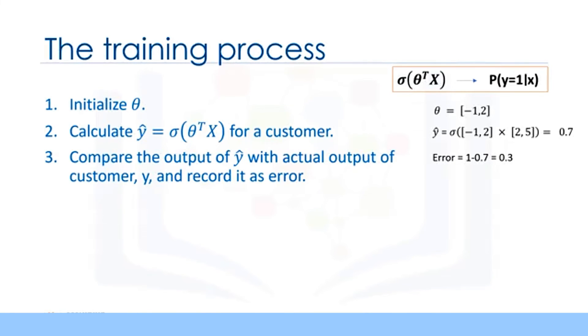Step 3. Compare the output of our model, y hat, which could be a value of, let's say, 0.7, with the actual label of the customer, which is, for example, 1 for churn. Then, record the difference as our model's error for this customer, which would be 1 minus 0.7, which of course equals 0.3. This is the error for only one customer out of all the customers in the training set.